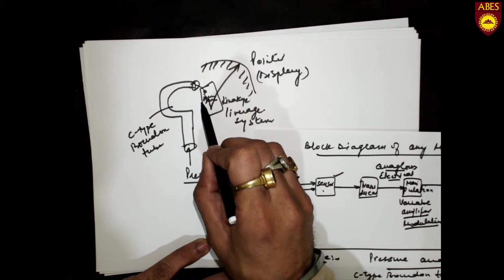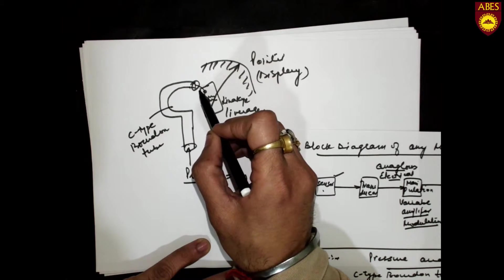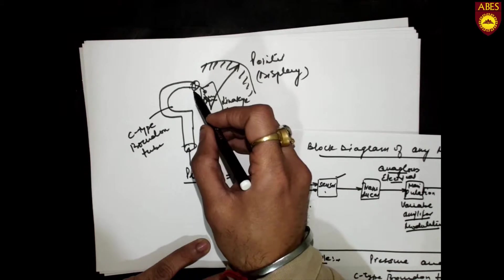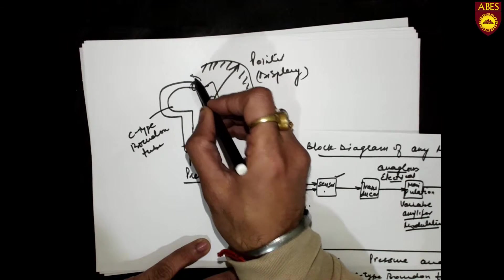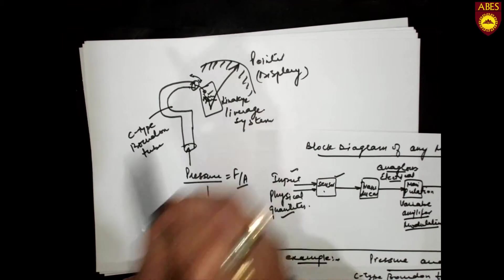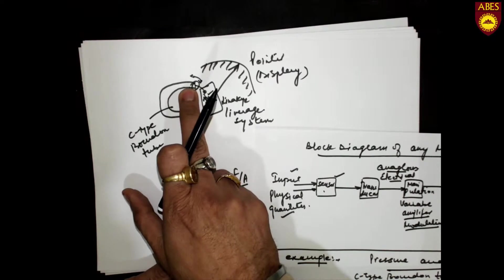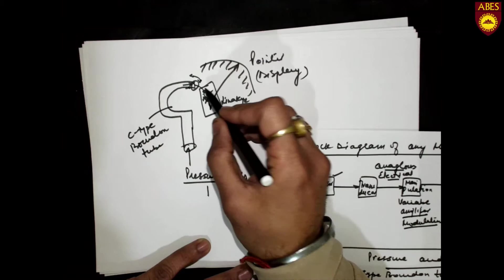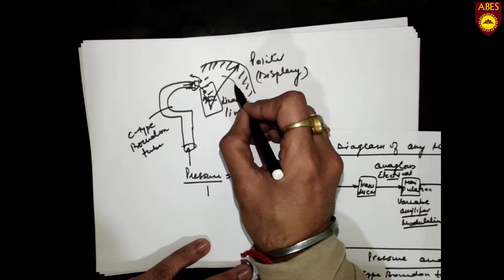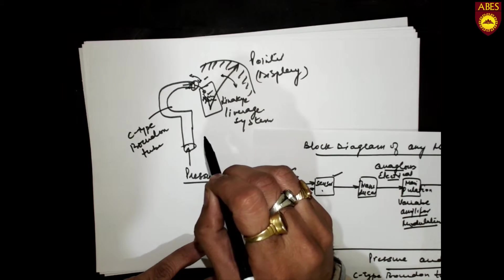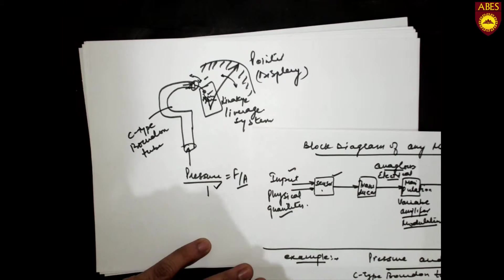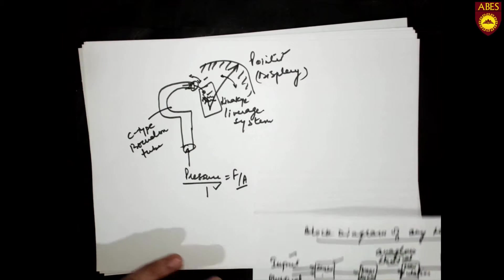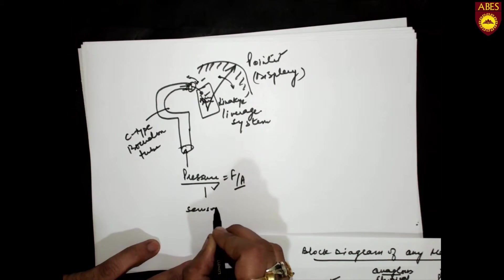We have a primary transducer. The physical quantity — pressure, which is force per unit area — is applied here, and the tube is deflected outward or inward. There is a linkage with a gear and pinion arrangement. Whenever the force or thrust is applied, the tube deflects outward, the rack and pinion moves, the pointer moves accordingly, and whatever pressure we are measuring is indicated on the pointer. This is the primary sensor.